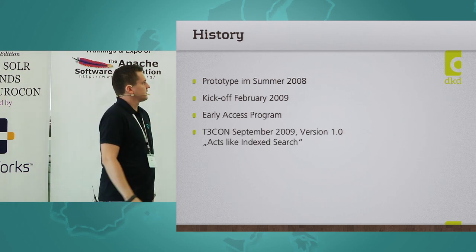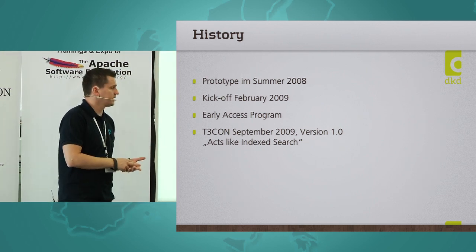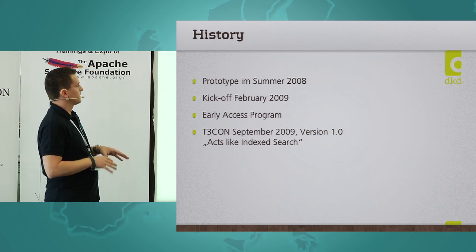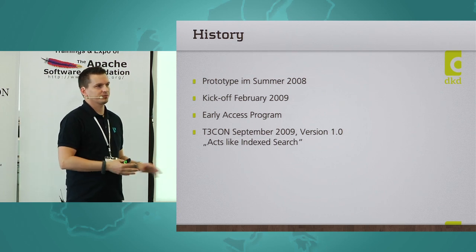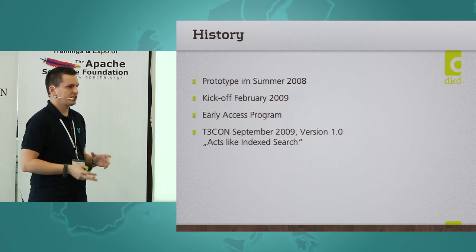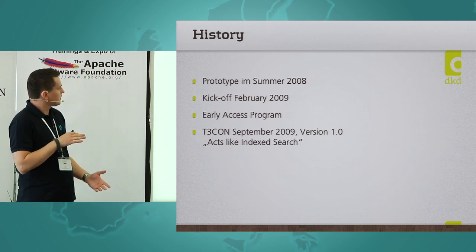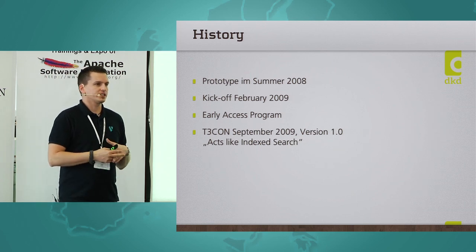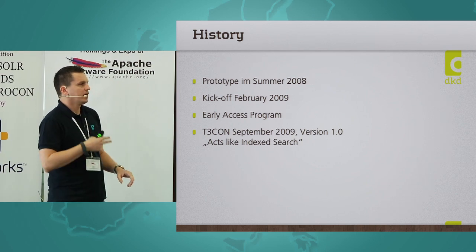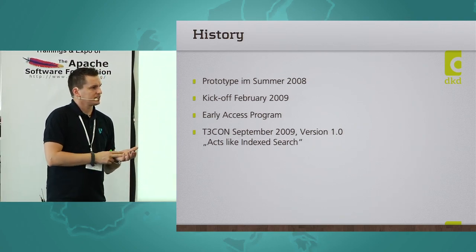After just about half a year later, there was the TYPO3 conference in 2009, and for that we released version 1.0. Our goal was to make it a drop-in replacement for the built-in search engine — Index Search. Which worked out pretty well. Solr really allowed us to get results very fast, and version 1.0 actually did more than just act like Index Search. We already had a much more flexible templating approach, and we had faceting, sorting, synonyms — all the stuff Solr offers.